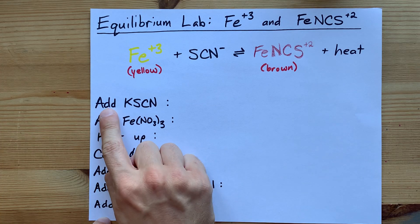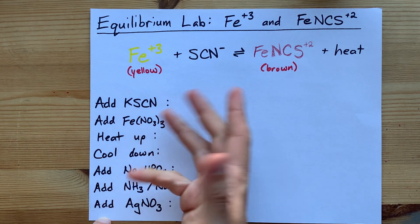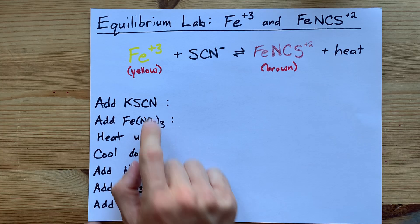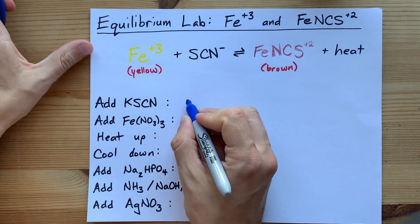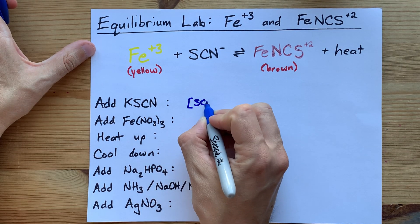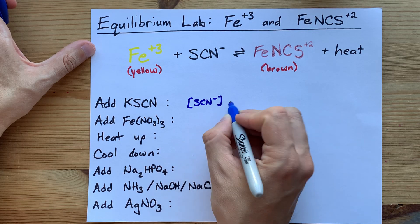If you were to add extra SCN, maybe as potassium thiocyanate to the solution, what you're doing is you're increasing the concentration of thiocyanate ion.